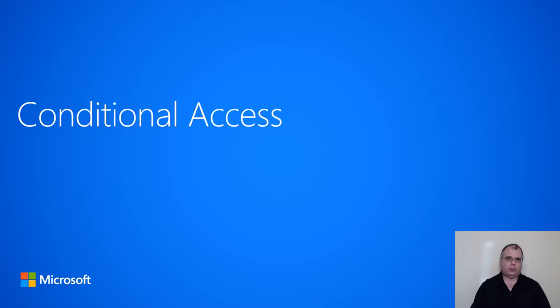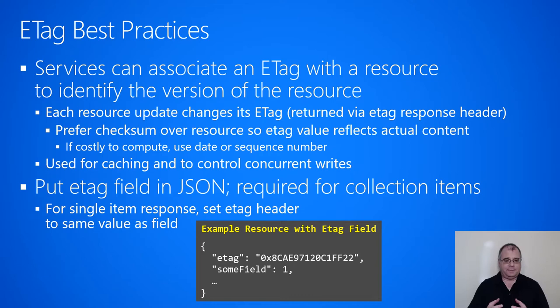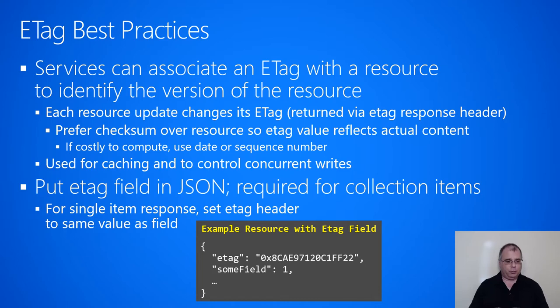In this section, we're going to talk about how to conditionally access a resource. This is useful to conditionally download it as well as to conditionally update it. In order to do these conditional operations, your resource has to have associated with it what's called an eTag, which is short for Entity Tag. Services can associate an eTag with a resource in order to identify the version of the resource. Each time a resource updates or modifies itself, its eTag value would also change. The eTag value usually comes back to the client in a response header called eTag. And then the client code can know, when it received the resource, the eTag or version that identifies that particular version of the resource.